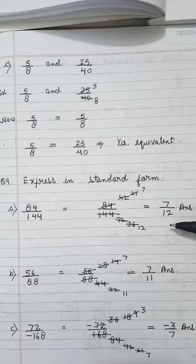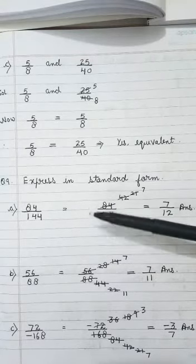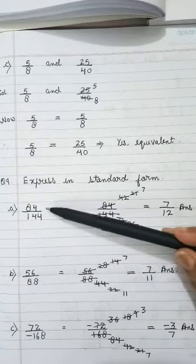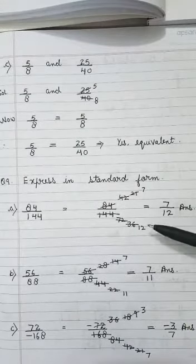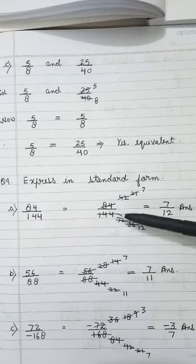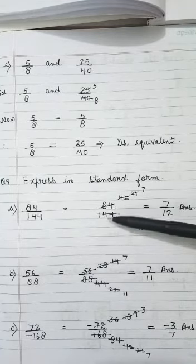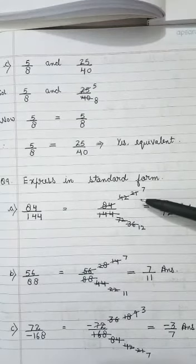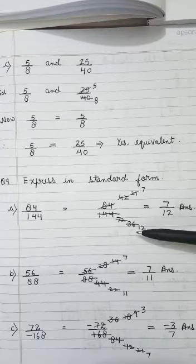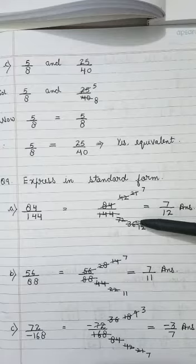This is 84 by 144. If you know the table of 12, you can directly cancel by 12: 84 divided by 12 is 7, and 144 divided by 12 is 12. If that doesn't come to you, you can cancel by 2 step by step: 84 by 2 gives 42, 144 by 2 gives 72; then again by 2 gives 21 and 36. Since 21 and 36 are not divisible by 2 but both are divisible by 3: 21 divided by 3 is 7, and 36 divided by 3 is 12. So the standard form is 7 by 12.